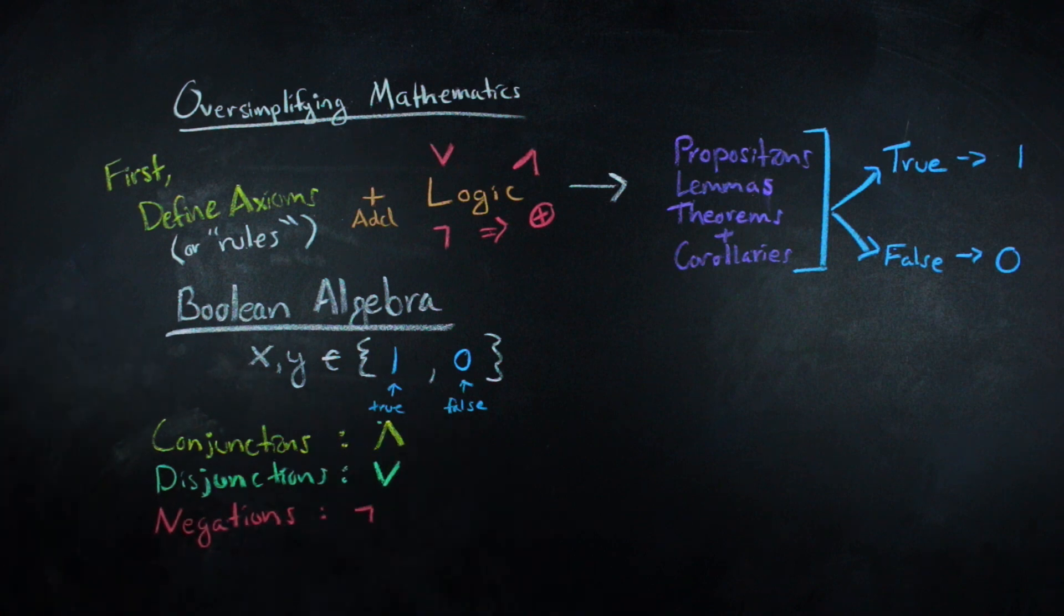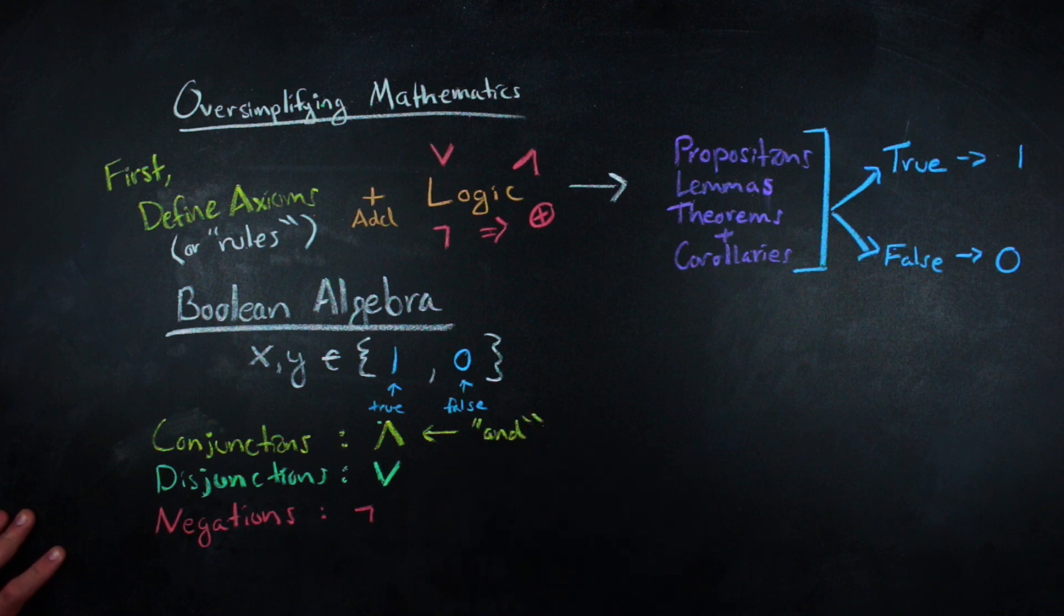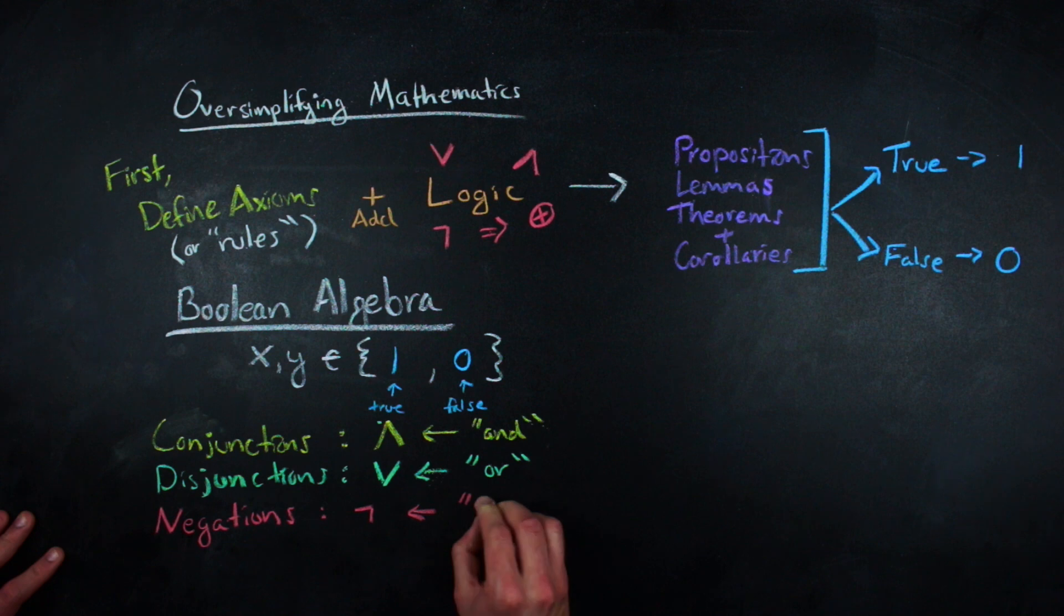There are a few ways to think about these symbols. First, we could get a little bit wordy. So conjunctions are and statements, disjunctions are or statements, and negations are not statements.